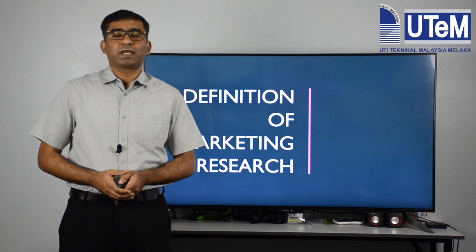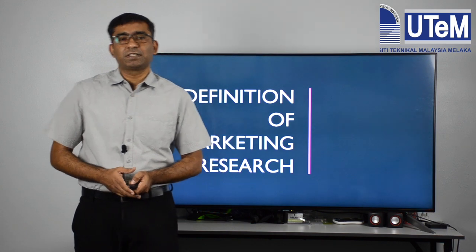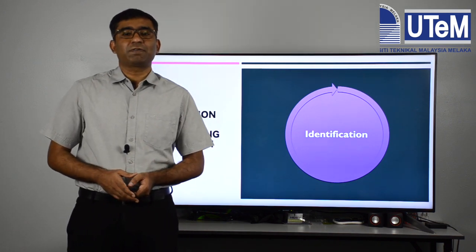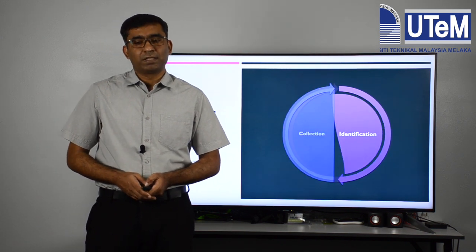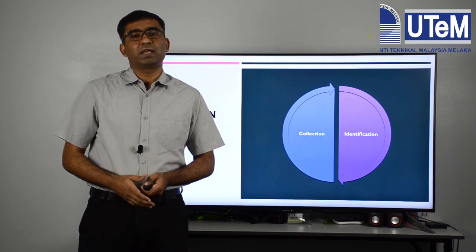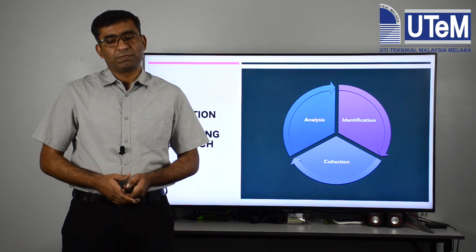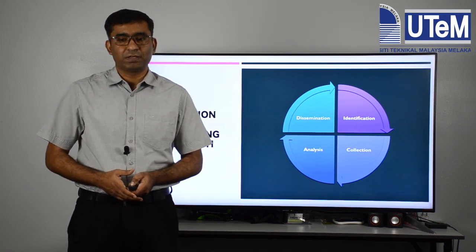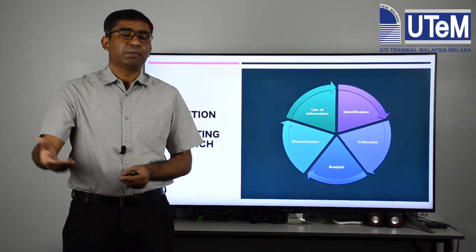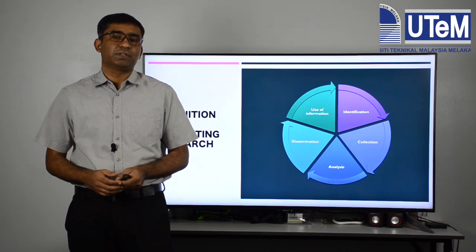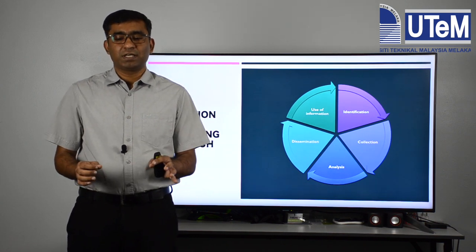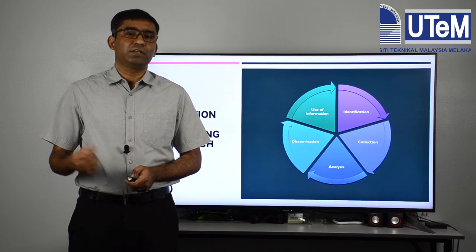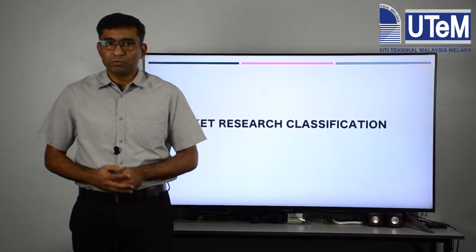Starting with the basic concepts of market technology intelligence and market research: there are five major components to why we do market research. Market research is a process of identification of information, then we collect that information, then we analyze it, then we disseminate the results and findings, and finally we look at the uses for decision-making purposes. So market research is basically identification, collection, analysis, dissemination, and use of market information.